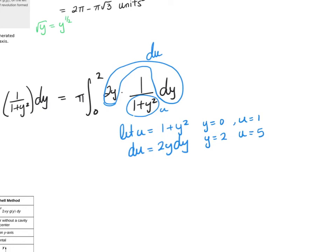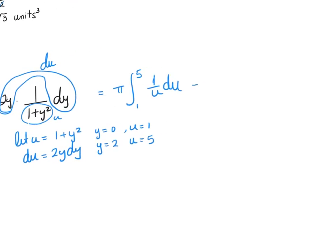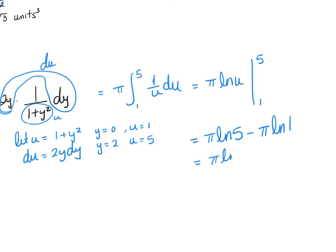The integral becomes π times the integral from 1 to 5 of 1/u du. We know the integral of 1/u is ln|u|, so this equals π [ln(u)] from 1 to 5 = π(ln 5 - ln 1). Since ln(1) = 0, the final answer is π ln(5) units cubed.